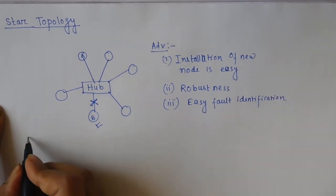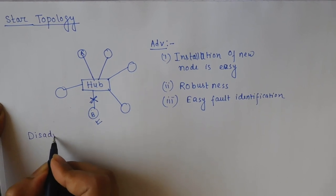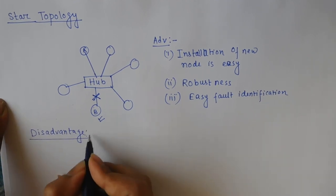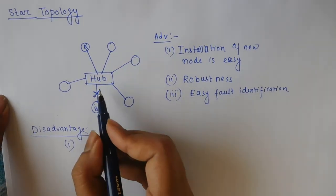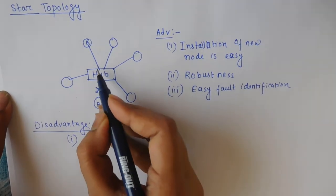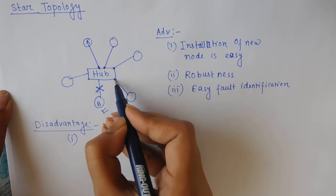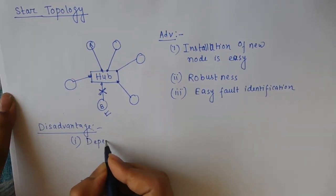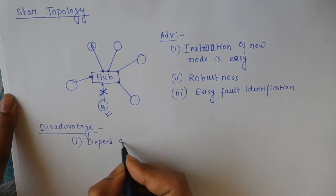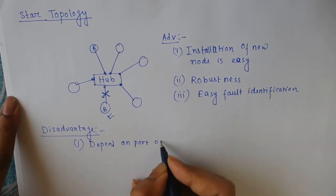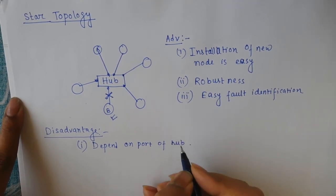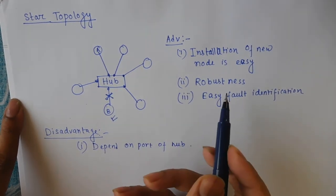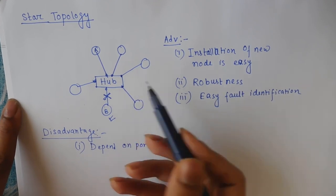The disadvantages: the number of nodes depends on the ports of the hub, so it depends on the port or hub capacity. We cannot use this in larger distances, and it is not as secure as mesh.